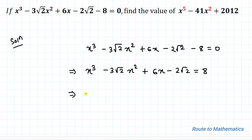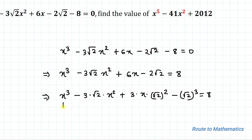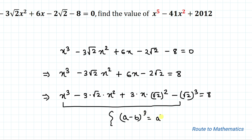This implies we can write x³ - 3√2·x² + 6x - √2 whole cubed equals 8. Notice that this is in the form of (a - b)³, that is a³ - 3a²b + 3ab² - b³.